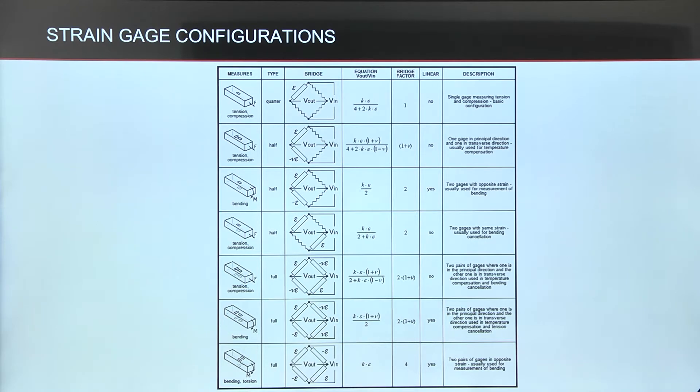Let's take a look at this table and see how different configurations work in practice. Listed examples show how to measure bending, tension, and compression. We can see how temperature and compensation can be done, how to cancel out undesired values during measurement, and so on.